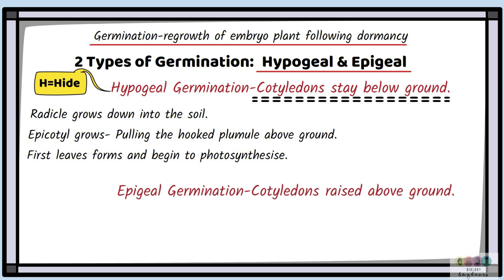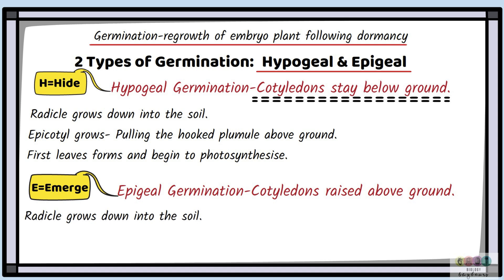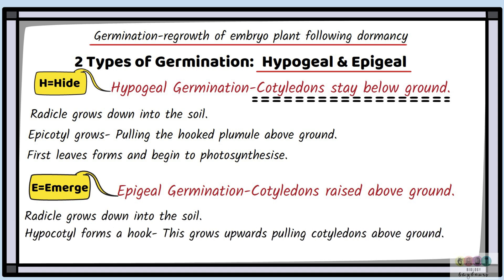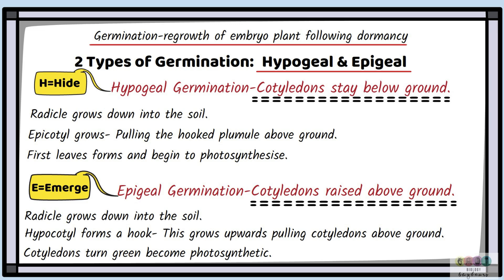In epigeal germination, the cotyledons are raised above the ground — think of E for 'emerge': they emerge above the ground. The radicle grows down into the soil and the hypocotyl starts to grow into a hook form. It grows and pulls the cotyledons above the ground. The cotyledons then turn green and become photosynthetic. The key feature of epigeal germination is that the cotyledons are raised above the ground.